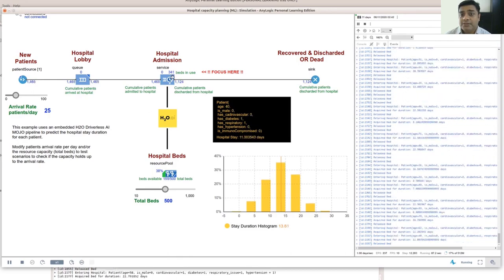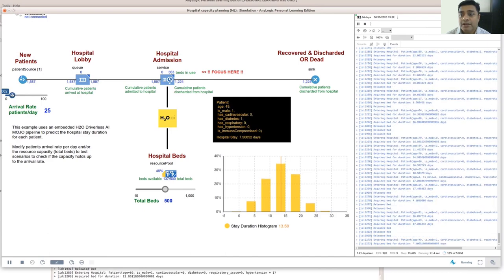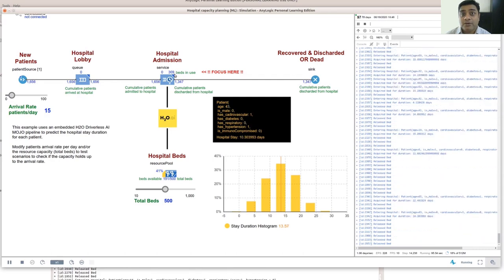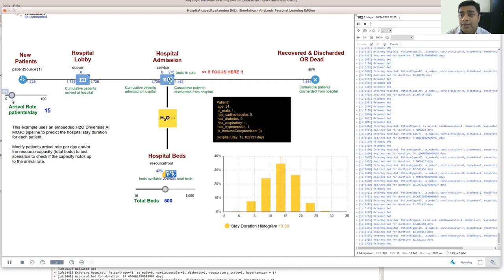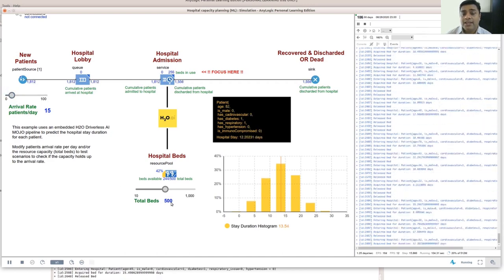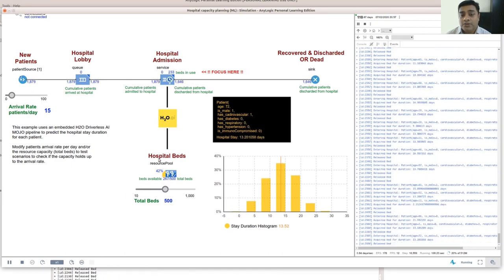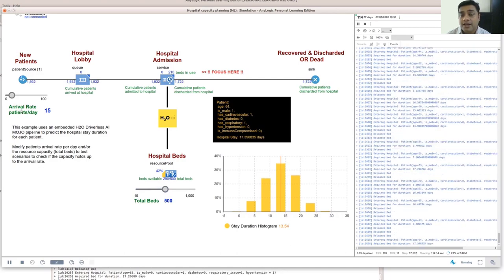If I increase the arrival rate from let's say 10 to somewhere around 20 or 25, you would see that the beds will start, the number of beds in use will start rising. It will rise to the point where the system will stabilize again. And that's when you would see that, and that's how you would determine the number of beds you need in the hospital to sustain an arrival rate of 25 patients per day with an average hospitalization duration of 13.6 days. And we can see that the system has now stabilized. If I kind of reduce the arrival rate again, you will see that the number of beds in use will start going down and the system will once again stabilize. So by manipulating the arrival rate and the total beds, one can really understand the amount of resources or hospital beds that are in need to meet a certain arrival rate of patients.